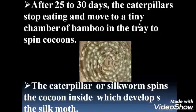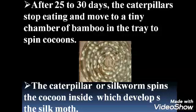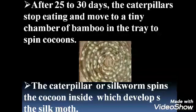After 25 to 30 days, the caterpillars stop eating and move to a tiny chamber of bamboo in the tray to spin cocoons.